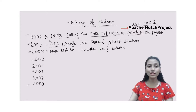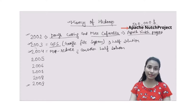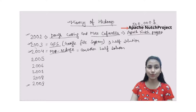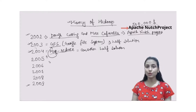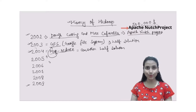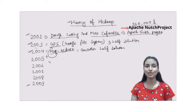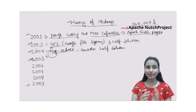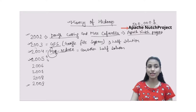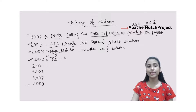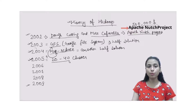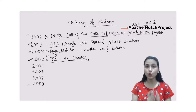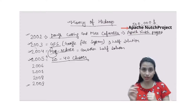So what Doug Cutting and Mike Cafarella did was combine Google's research papers together and started using them in their Apache Nutch Project as open source. Now in 2005, Cutting felt that the Apache Nutch Project was limited to only 20 to 40 clusters, which was again a limitation for their project.